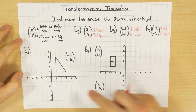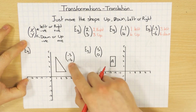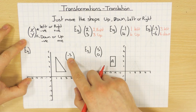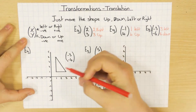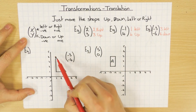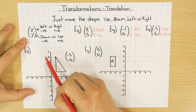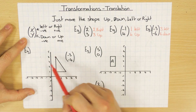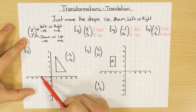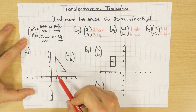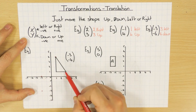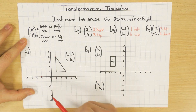Looking at an actual example: here's my shape and the vector is minus 3, minus 4 — so I move the shape 3 to the left and 4 down. I'll choose the top point and move it 3 to the left: 1, 2, 3, then go down 4: 1, 2, 3, 4 — so this point moves here. You can do the same with every single point on the shape, moving each one 3 left and 4 down.